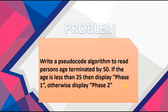Our final example: write a pseudocode algorithm to read a person's age terminated by 50. If the age is less than 25 then display 'phase 1', otherwise display 'phase 2'. At any point a user enters the age 50, the program will stop running. If the user did not enter 50, they would receive one of two messages: if their age entered was less than 25 they would see 'phase 1'; if the value was greater than 25, they would see 'phase 2'.